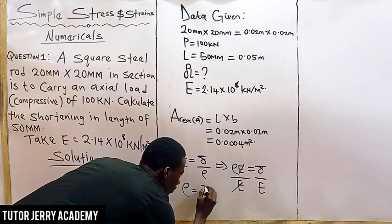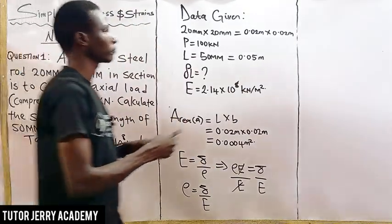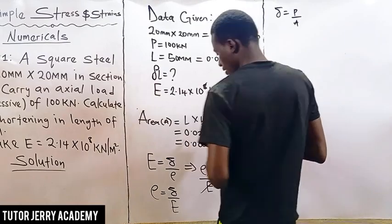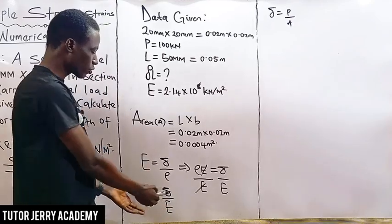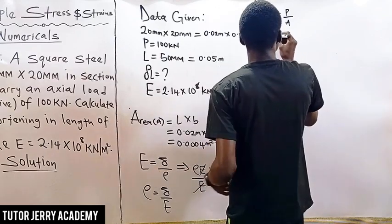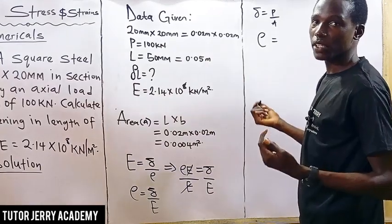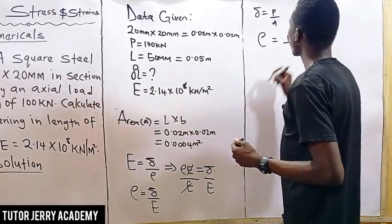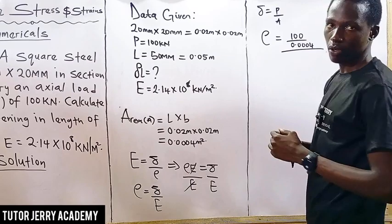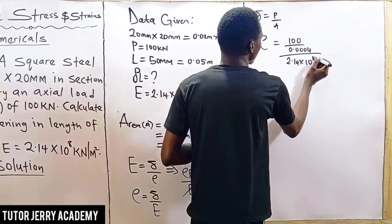We know that sigma equals our force all over area. So we are going to substitute that in and find our strain. E equals sigma — which is force over area — all over our modulus of elasticity. Our force is 100 kilonewtons, all over our area 0.0004, all over our modulus of elasticity 2.14 times 10 to the power of 8.